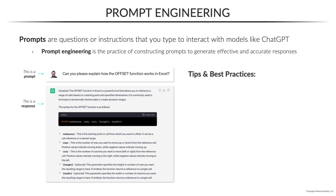Here are some tips and best practices for writing good prompts. Number one, be as clear and specific as possible. Number two, provide context and examples wherever you can — things like including cell references or column names if you're trying to generate formulas or code.